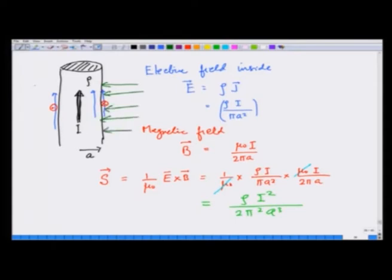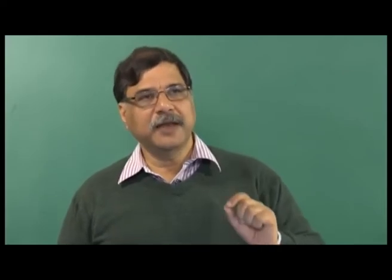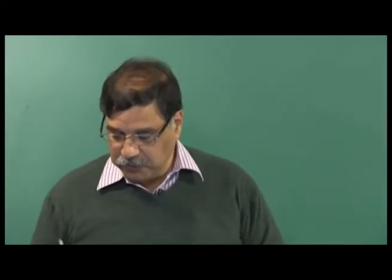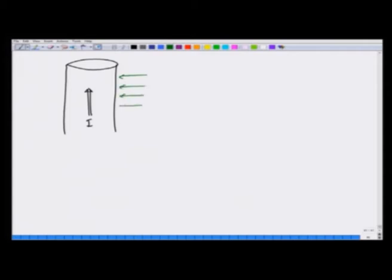So we have this energy flowing into the volume of the wire. In reality there are also surface charges that give an E field perpendicular to the wire making energy flow along the wire, but that goes beyond what we want to show here. We just want to show that the heat being produced inside is brought in by the Poynting vector, and S = ρi²/(2π²a³) is sufficient to show that.